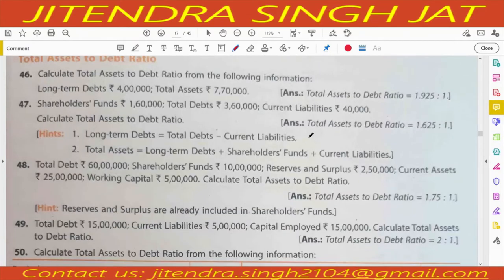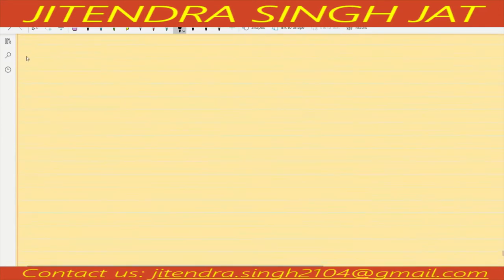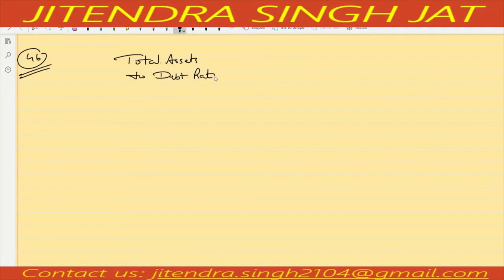Let's start a new ratio: total assets to debt ratio, which is one of the very important solvency ratios. We will start with question number 46. The formula is total assets upon debt. In this solvency ratio, debt means long term borrowing and long term provisions — remember, debt means long term borrowing and long term provision.